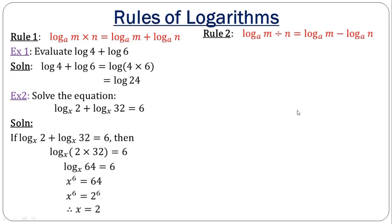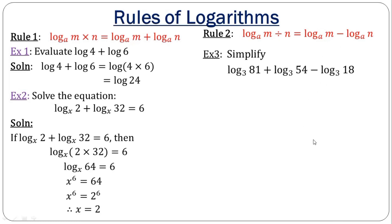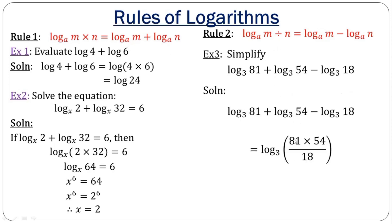The second rule is the subtraction rule. It says that if you are subtracting two logarithms with the same base, that is the same as division — you just pick one logarithm and divide the numbers. This example is a combination of both the addition and subtraction rules. By BODMAS, addition comes before subtraction, so I multiply the first numbers and then divide by 18. When you multiply and divide by 18, you get 243, and of course this gives us 5.